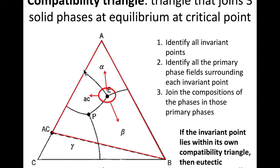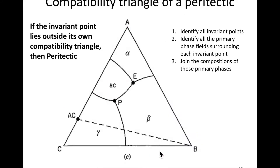This red triangle represents the eutectic compatibility triangle. For the peritectic, we again identify the three primary phase fields surrounding that invariant point, find their compositions, and draw a triangle connecting those three compositions.